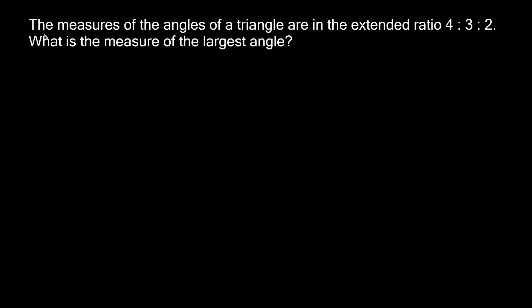Alright, so now this problem says the measures of the angles of a triangle are in the extended ratio 4, 3, 2. What is the measure of the largest angle? So again, we have just a random triangle over here. And now we're given the ratio of all the angles: 4, 3, 2. So let's just say this one's 4, this one's 3, and this one's 2.